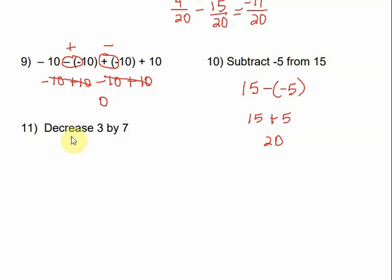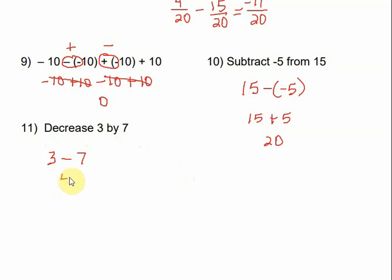Number 11 says: decrease 3 by 7. We start with 3 and decrease it by 7, so that's 3 minus 7. Positive 3 and negative 7 have different signs, so we subtract and get 4, but the answer is negative 4 because the bigger number is negative.